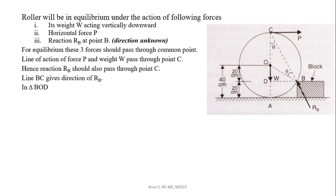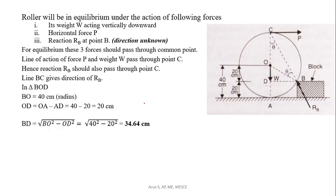In triangle OBD, OB is radius 40 cm. What is OD? OA is radius 40 cm and AD is height of the block 20 cm, so OD will be equal to 20 cm. What is BD? This is a right angle triangle. BD will be equal to square root of OB squared minus OD squared. We will get BD as 34.64 cm.